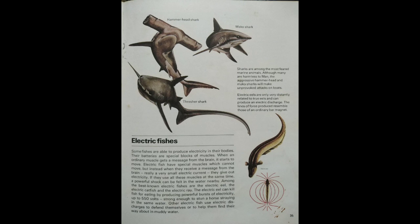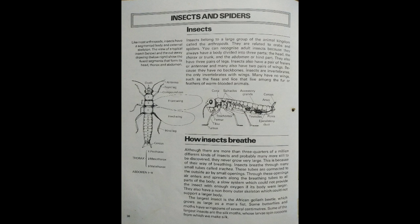Sharks are among the most feared marine animals. Although many are harmless to man, the aggressive hammerhead and mako sharks will make unprovoked attacks on boats. Electric eels are only very distantly related to true eels and can produce an electric discharge; the lines of force produced resemble those of an ordinary bar magnet. Like most arthropods, insects have a segmented body and external skeleton. The view of a typical insect and the cutaway drawing show the few segments that form its head, thorax, and abdomen.